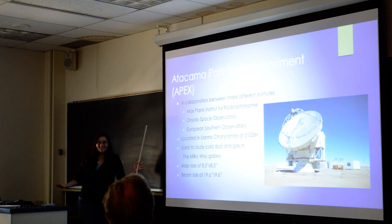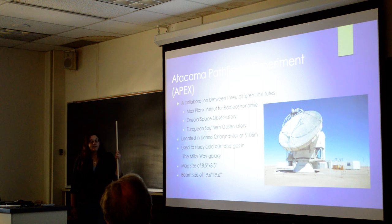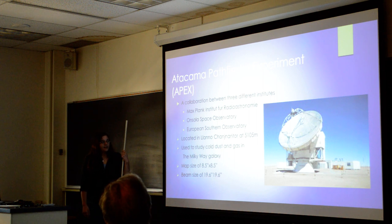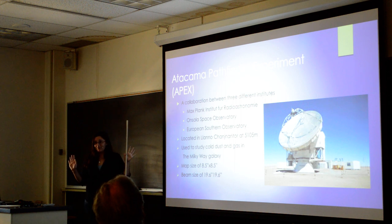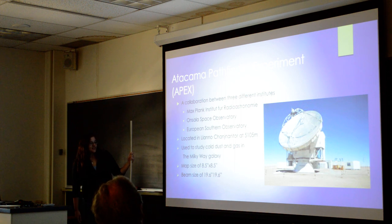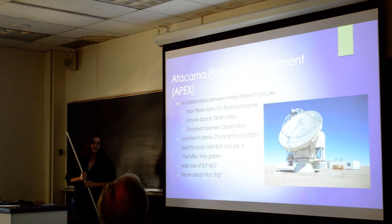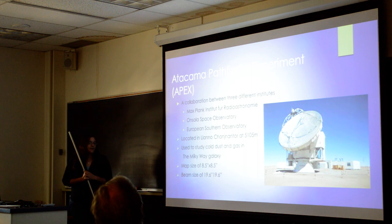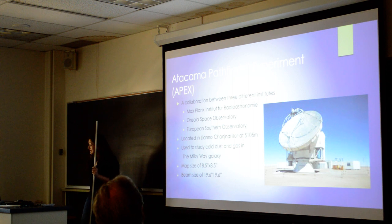One of the most important things is actually where we got the data from. It's from a radio telescope called APEX, which is a collaboration between three different institutes: the Max Planck Institute for Radio Astronomy, Onsala Space Observatory, and the European Space Observatory. It's located in, I apologize if I butcher the name, Llano de Chajnantor, and it's at 5,105 meters. It's used to study cold dust and gas in the Milky Way galaxy. Our maps are 8.5 arcminutes by 8.5 arcminutes, and a beam size of 19.36 arcseconds by 19.36 arcseconds.